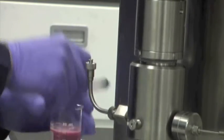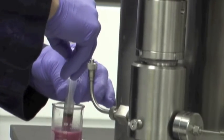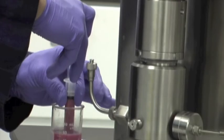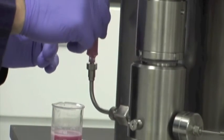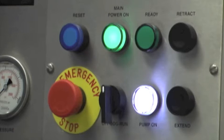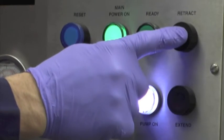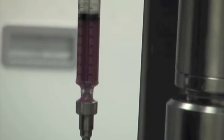Next, simply draw your sample into the provided luer lock syringe and attach it to the inlet connection. Here we are creating an oil and water emulsion, colored red and blue, to visually demonstrate processing effects. Press and hold the retract button to pull in as much of the product as desired, then release.